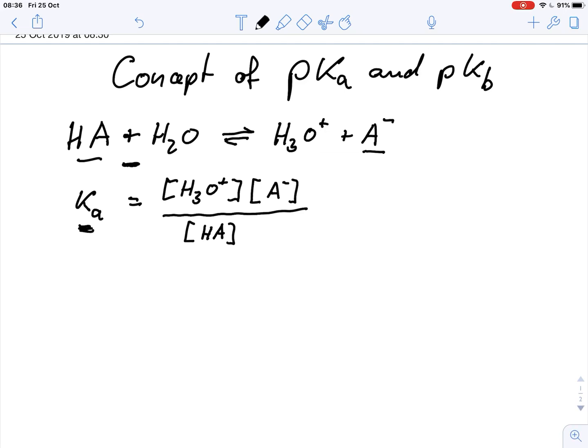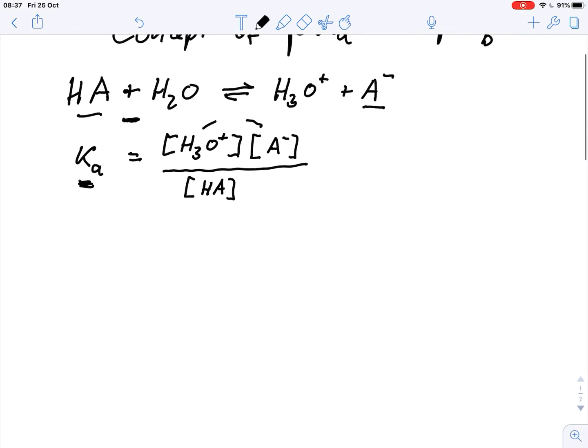So that means that the concentration of the protons and the base are usually very small. We would get something rather small for Ka, especially when we are dealing with weak acids.